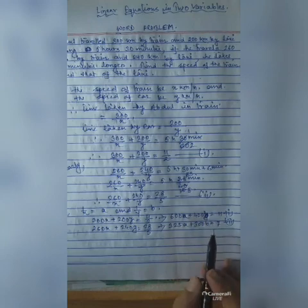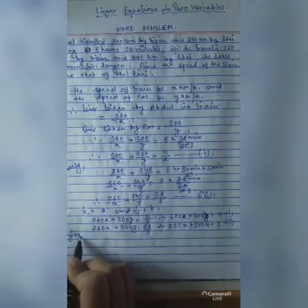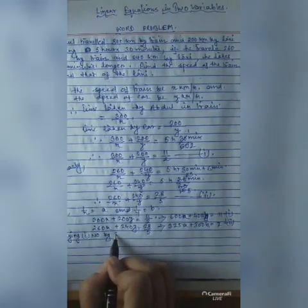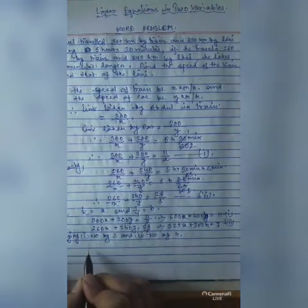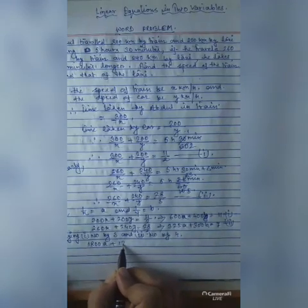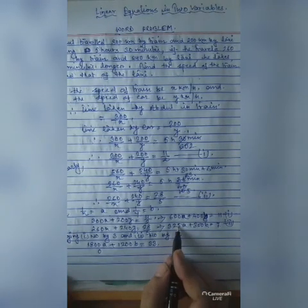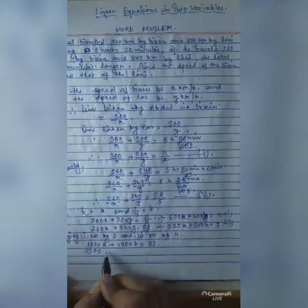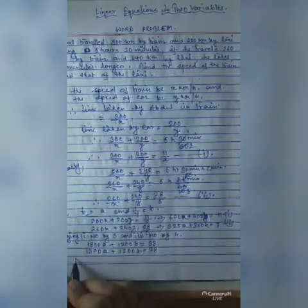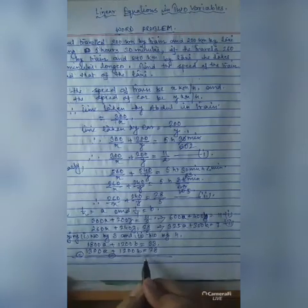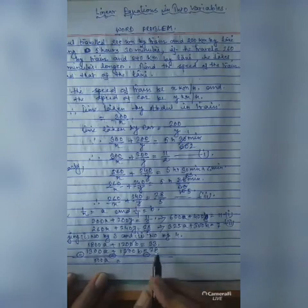And 260A plus 240B equals 28/5, which simplifies to 325A plus 300B equals 7. This is equation two. To eliminate B, multiply equation one by 3 and equation two by 4. This gives 1800A plus 1200B equals 33, and 1800A plus 1200B equals 28. Subtracting, 500A equals 5.